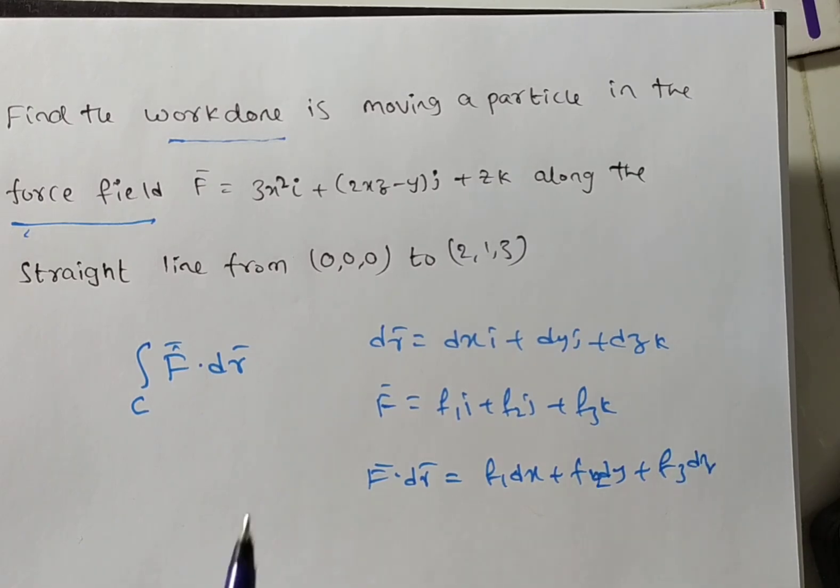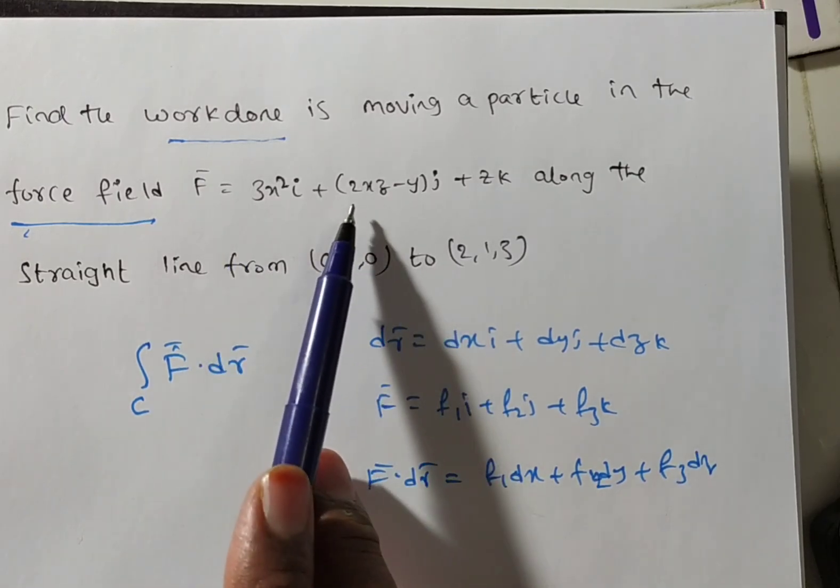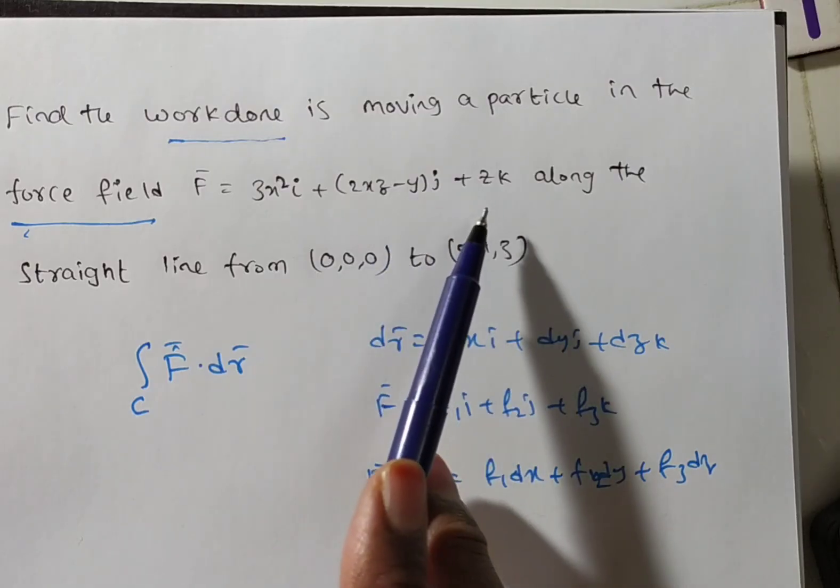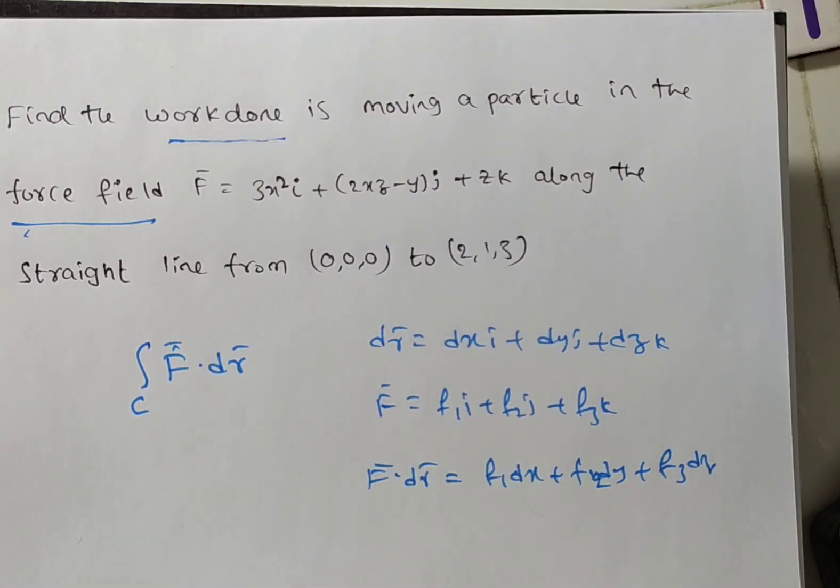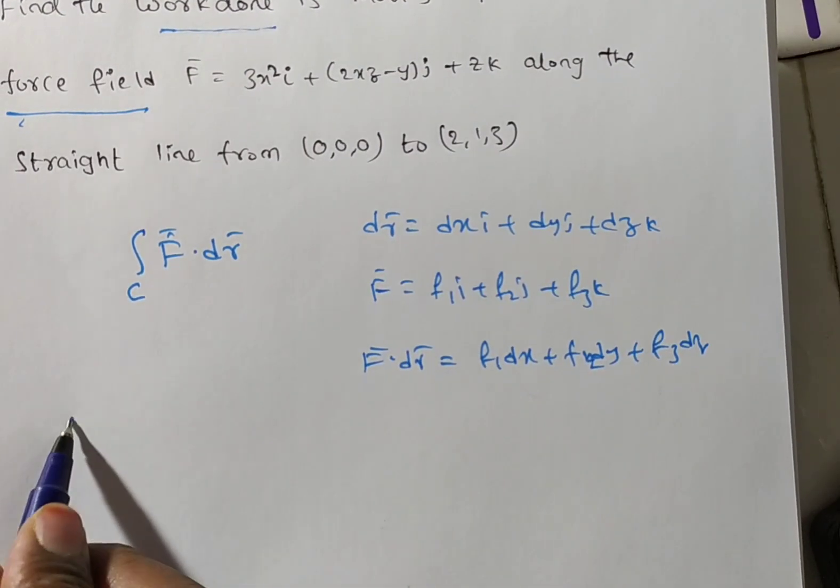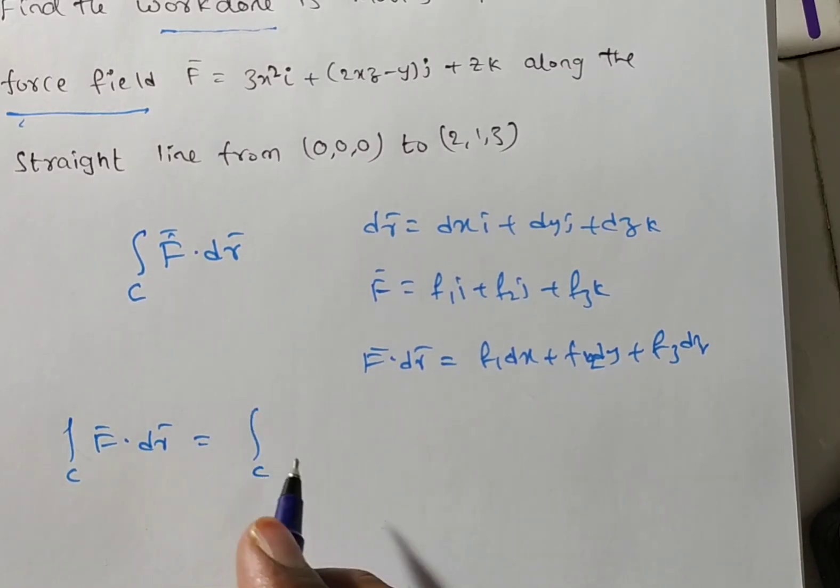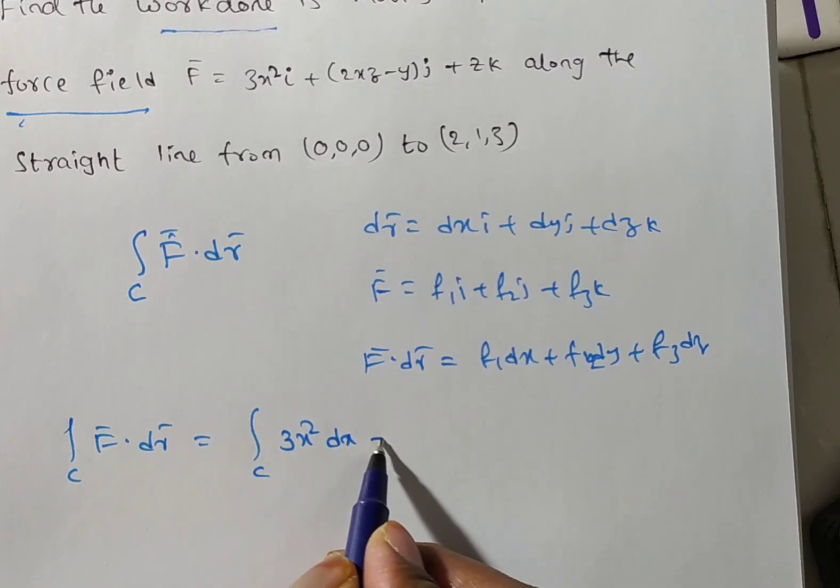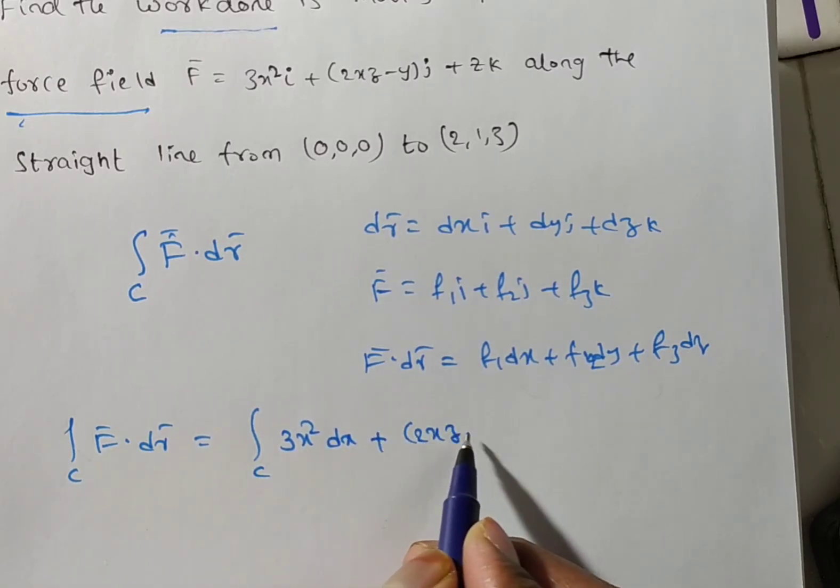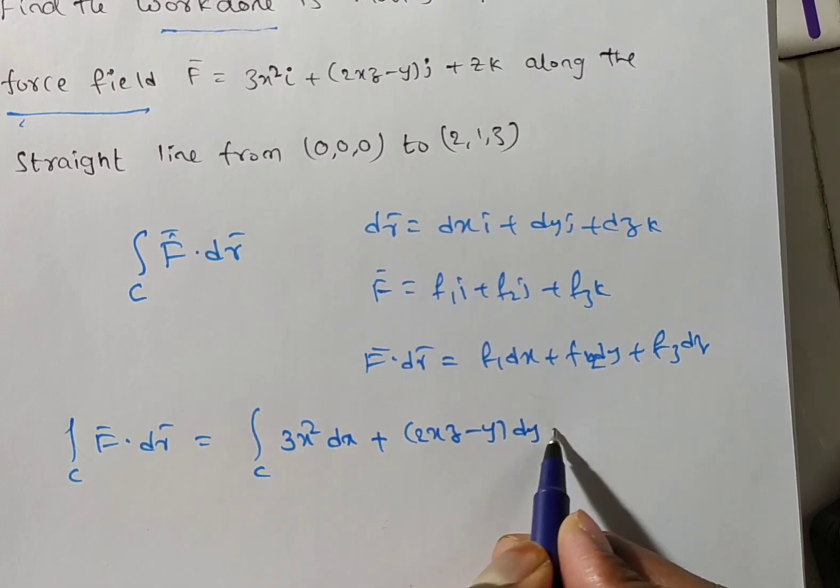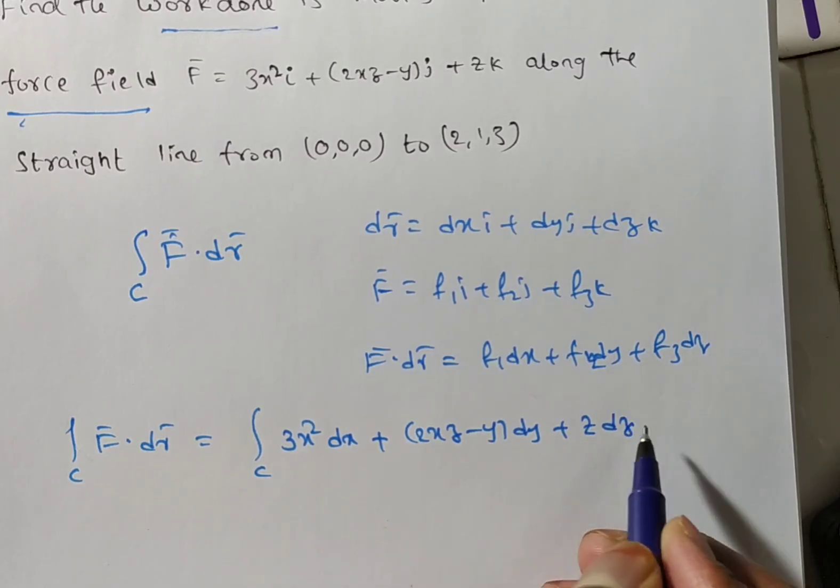Then F bar dot dr bar will become f1dx plus f2dy plus f3dz. So, what about f1? 3x squared. f2, 2xz minus y. f3, z. Substitute these all values in this integration. Then integral over C F bar dot dr bar equals integral over C 3x square into dx plus 2xz minus y into dy plus z into dz.